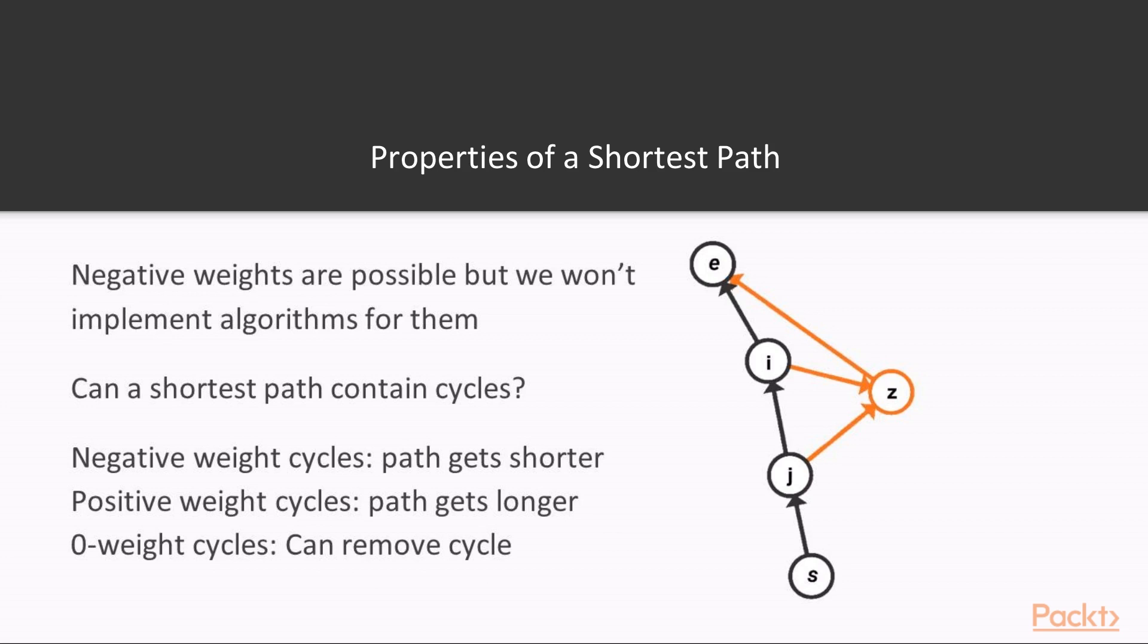We might wonder if a shortest path can contain cycles, but it is quite easy to see that this is not possible. If we have a negative weight cycle, we could just continue going around this cycle forever and get a lower and lower path weight. If we have a positive weight cycle, we would end up at the same spot if we went through the cycle, which would give us a higher path weight and thus we would no longer have found the shortest path.